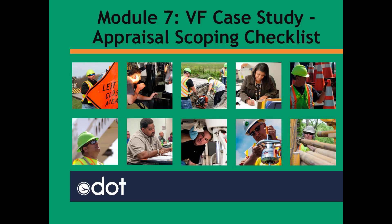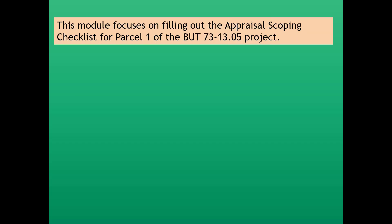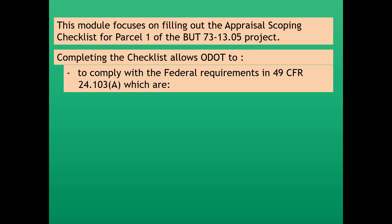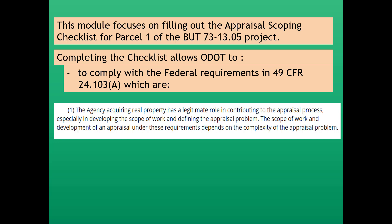In this module, we are going to talk about the Appraisal Scoping Checklist. This module focuses on filling out the Appraisal Scoping Checklist for Parcel 1 of Butler 73, 13.05, and completing the Appraisal Scoping Checklist allows ODOT to comply with the federal requirements in 49 CFR 24.103a. Those requirements state that the agency acquiring real property has a legitimate role in contributing to the appraisal process, especially in developing the scope of work and defining the appraisal problem, which depends on the complexity of the appraisal problem.